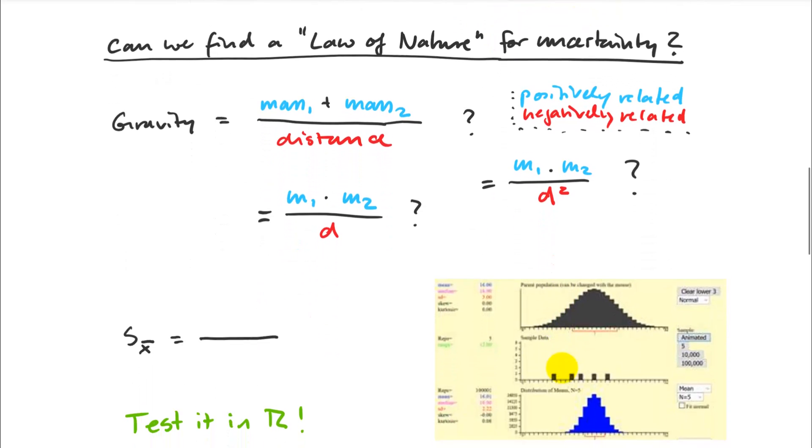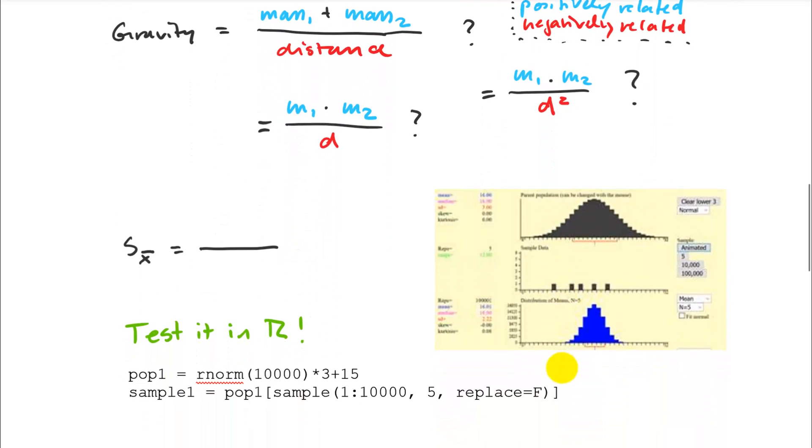And we could do the same thing for the natural law for uncertainty. So what we want to know is what is the distribution of my means. So let's measure this in standard deviations of my means in repeated sampling. And so what do you think contributes positively to the size of the standard deviation? And what contributes negatively to the size of the standard deviation? And you can test it.